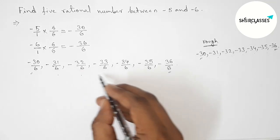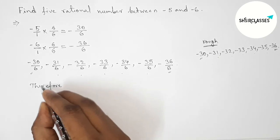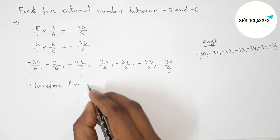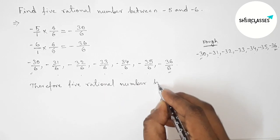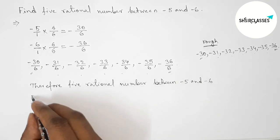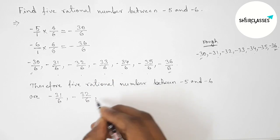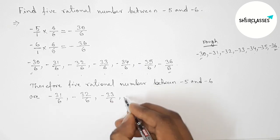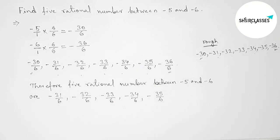Therefore, the required 5 rational numbers between minus 5 and minus 6 are: minus 31 by 6, then minus 32 by 6, then minus 33 by 6, minus 34 by 6, minus 35 by 6. Or we can write, if we divide both numbers by 2, then 16 by 3, dividing by 3 gives 11 by 2.